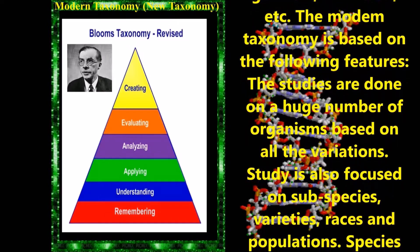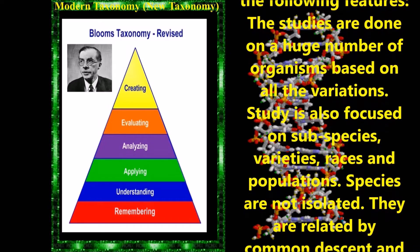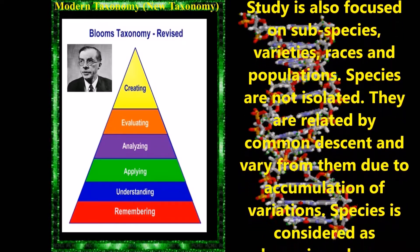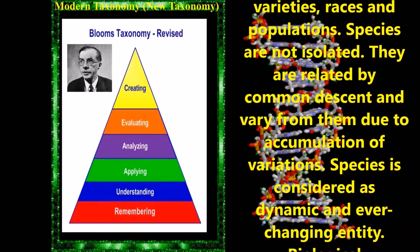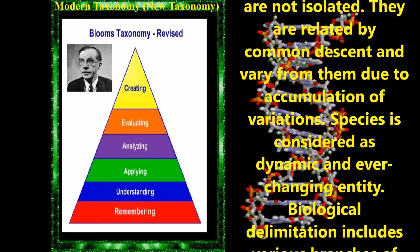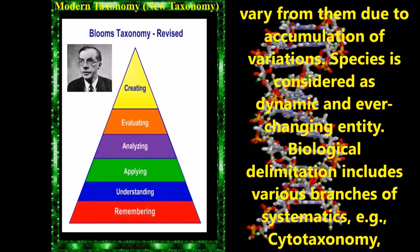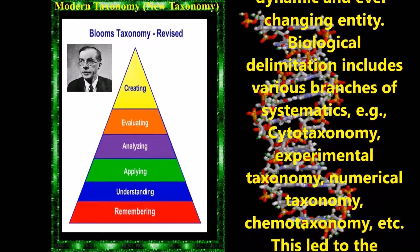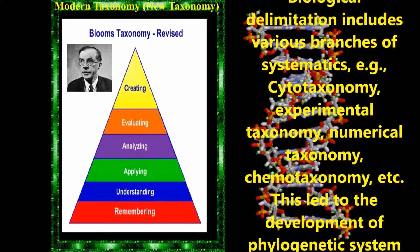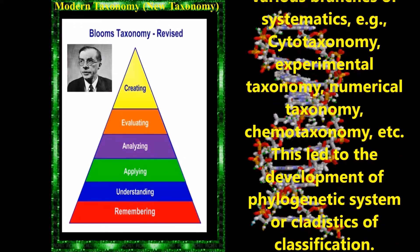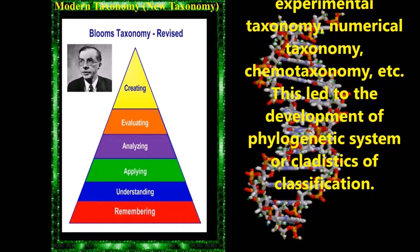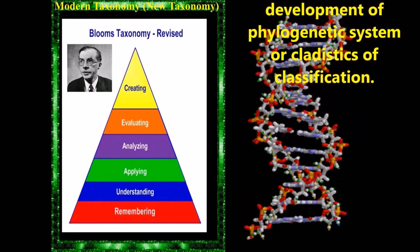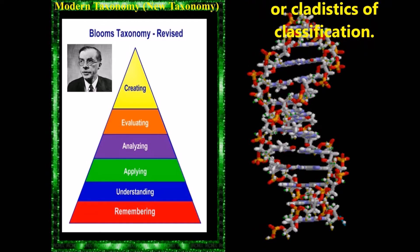The modern taxonomy is based on the following features. Studies are done on a huge number of organisms based on all the variations. Studies are also focused on subspecies, varieties, races and populations. Species are not isolated; they are related by common descent and vary from each other due to accumulation of variations. Species are considered dynamic and ever-changing entities. Biological delimitation includes various branches of systematics, such as cytotaxonomy, experimental taxonomy, numerical taxonomy, chemotaxonomy, etc. This leads to the development of phylogenetic systems or cladistics of classification.